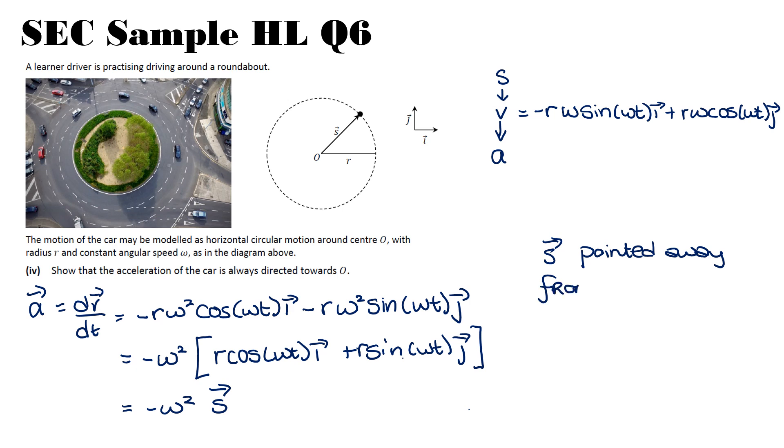So S pointed away from O. Look at our diagram. Therefore, minus omega squared. The omega doesn't really make a difference. It's the minus. When we multiply that S by a minus, which is actually acceleration, points towards O. Minus means opposite direction. So really be clear about what that minus means with our vectors.